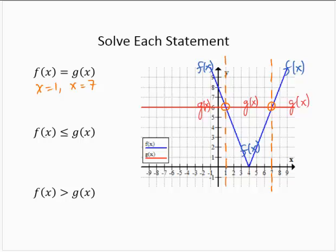When solving f of x is less than or equal to g of x, we want f of x to be below g of x. So we literally look and say, where is f of x below g of x? In the first region, f of x is above. In the second region, f of x is below, so I shade that part of the number line. In the third region, f of x is above.